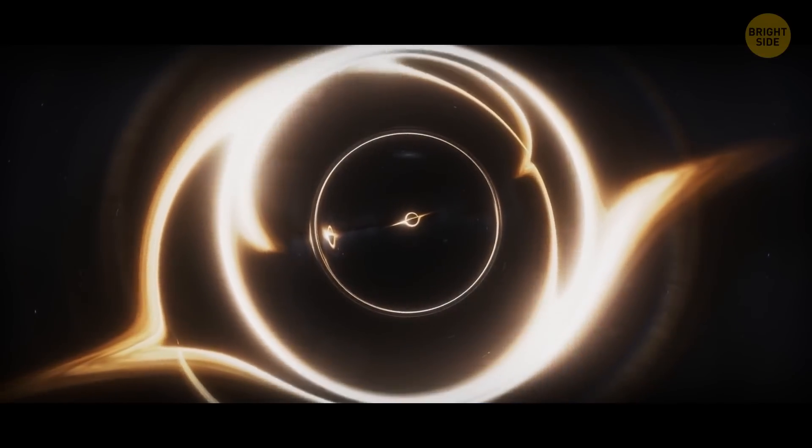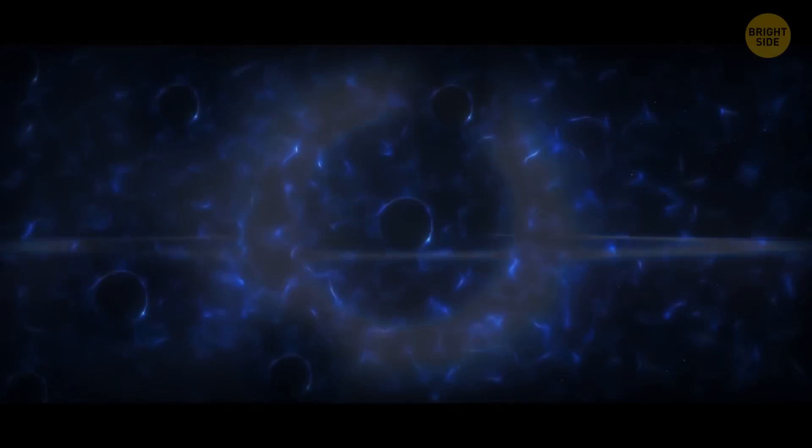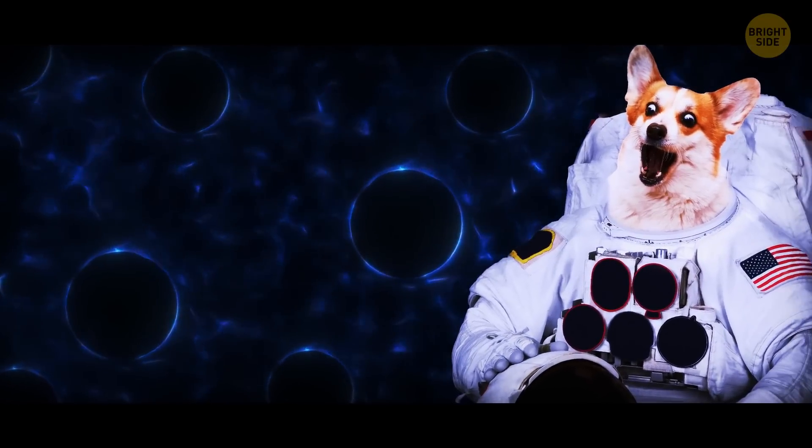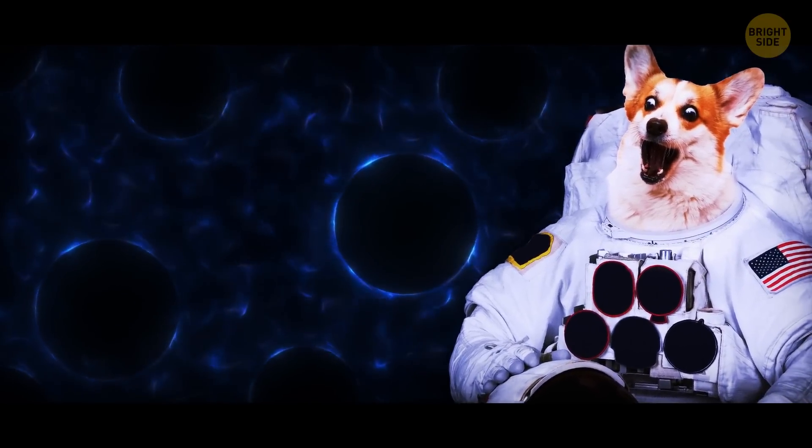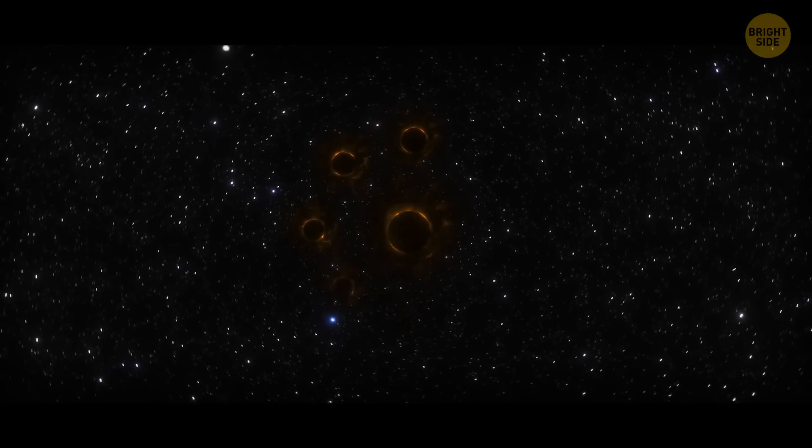The smallest black holes are the stellar mass kind. They're born when the massive star runs out of juice and folds in on itself. They're like the chihuahuas of the black hole world. They may be tiny, but they're feisty. They gobble up nearby matter like a hungry puppy.